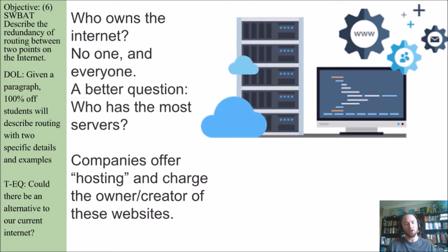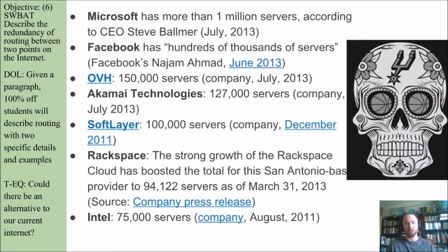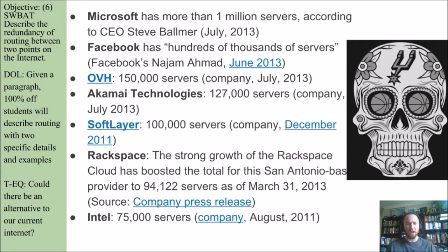Companies offer hosting and charge the owner or creator of websites a fee for that hosting of data. Who owns the most servers? Microsoft has more than 1 million servers. Facebook has hundreds of thousands of servers — we don't quite know the number. OVH has 150,000 servers. Akamai Technologies has 127,000. SoftLayer has 100,000. Rackspace's strong cloud growth boosted the San Antonio-based provider to 94,000 servers as of March 31, 2013. And Intel has 75,000 servers.